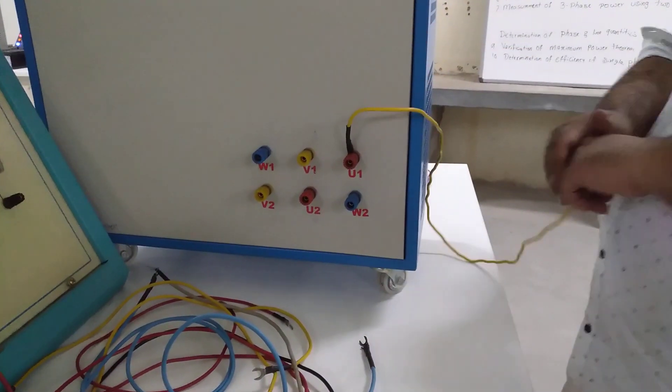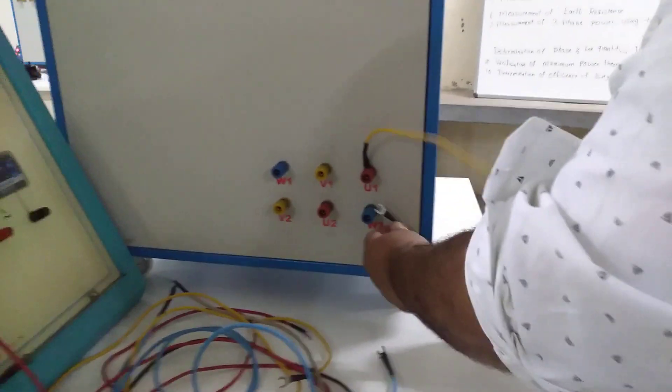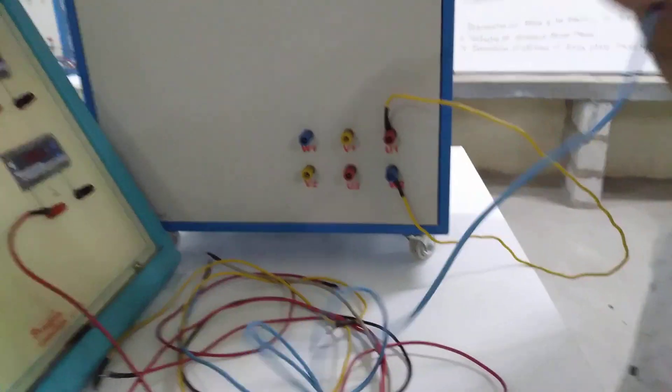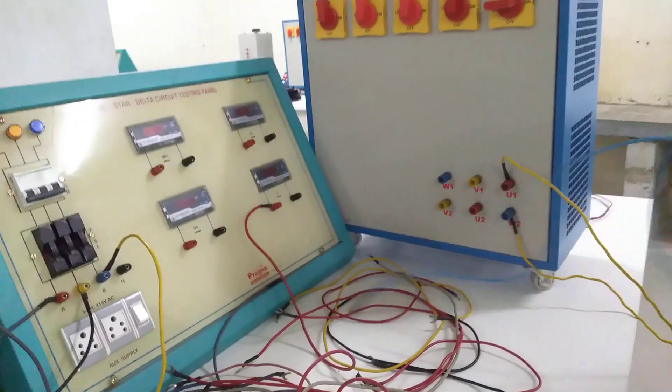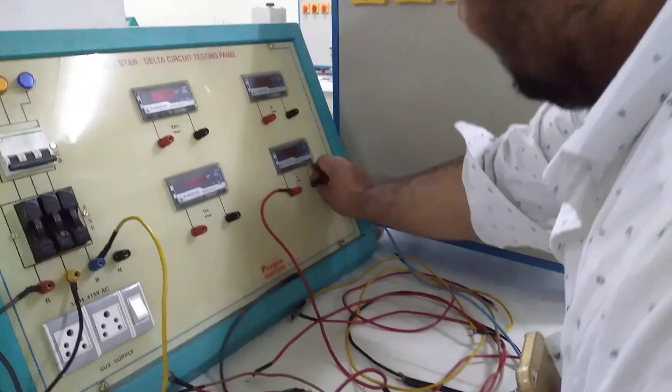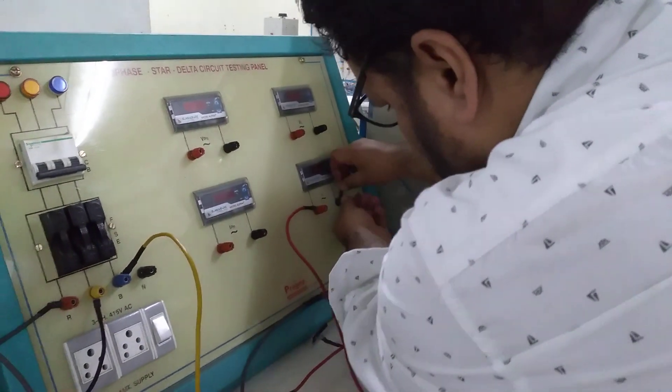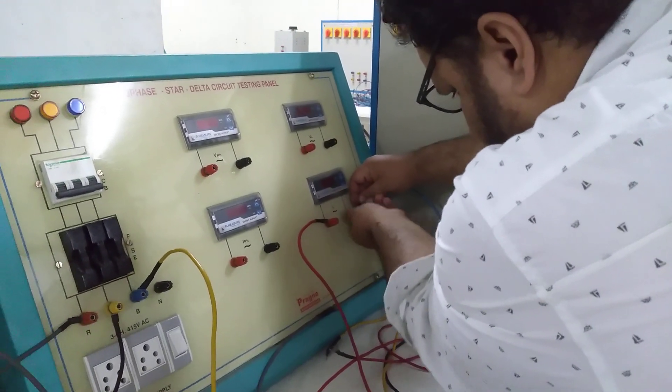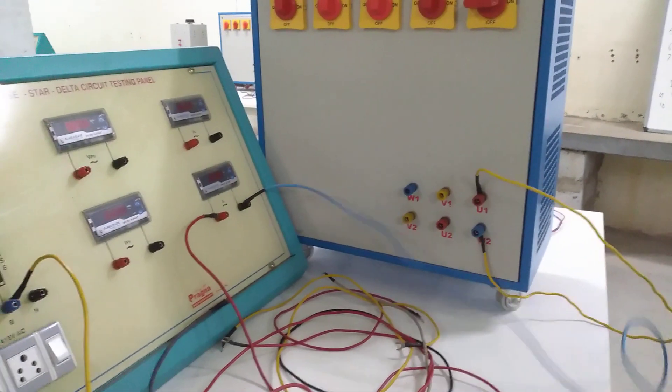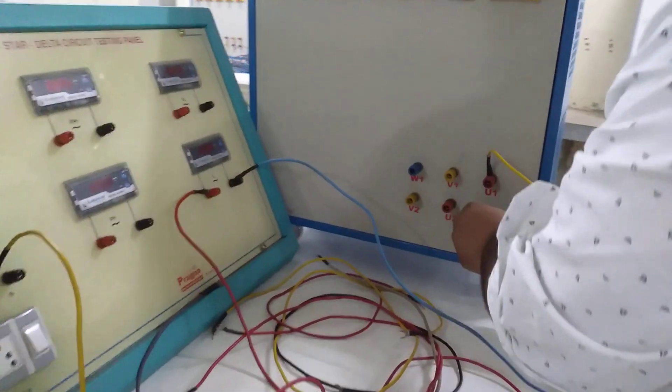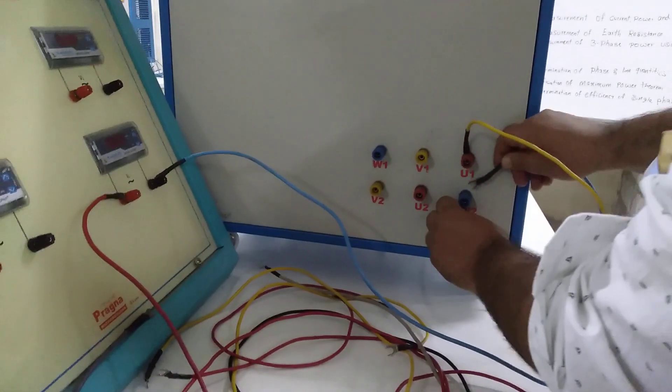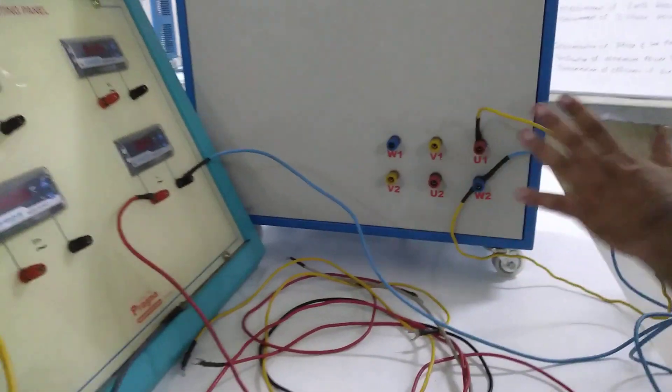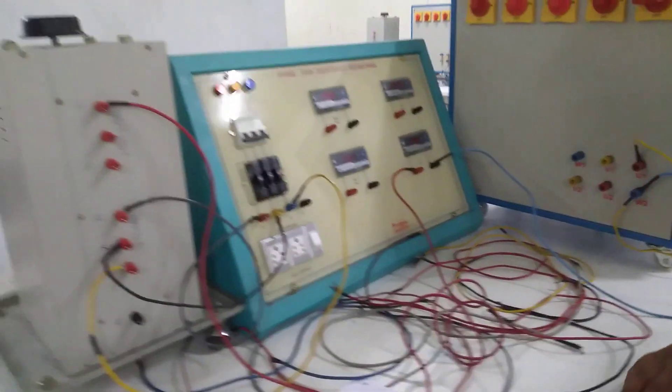U1 and W2 I am shorting, and the other end of the R line, I will give to this. R line I will give to this.